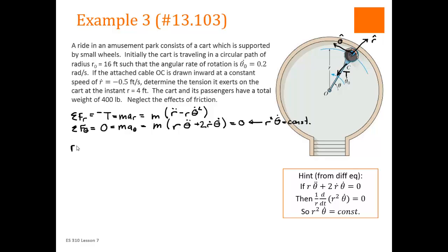So initial conditions r at zero is equal to 16. And theta dot at zero is equal to 0.2. So those are our initial conditions.